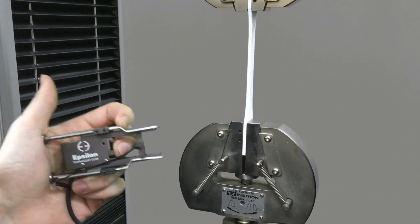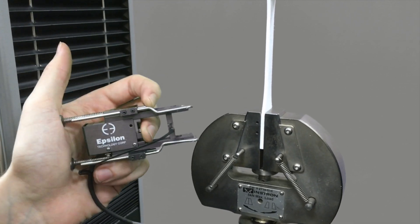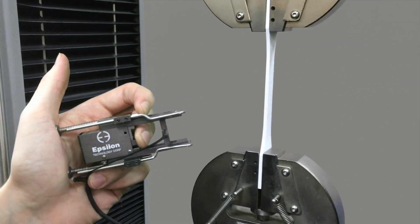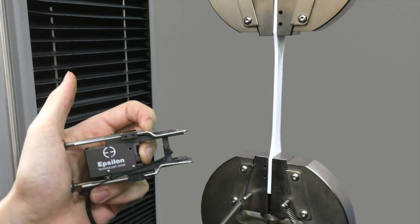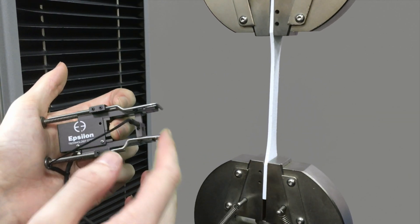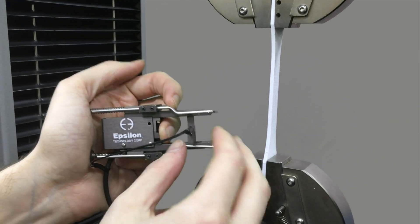The most important thing to remember about extensometers is that each one has what's called a gauge length. A gauge length is essentially a reference used for calculations in acquiring the data. When you set your extensometer on a sample, the teeth are a certain length apart to begin with. This is called the gauge length.